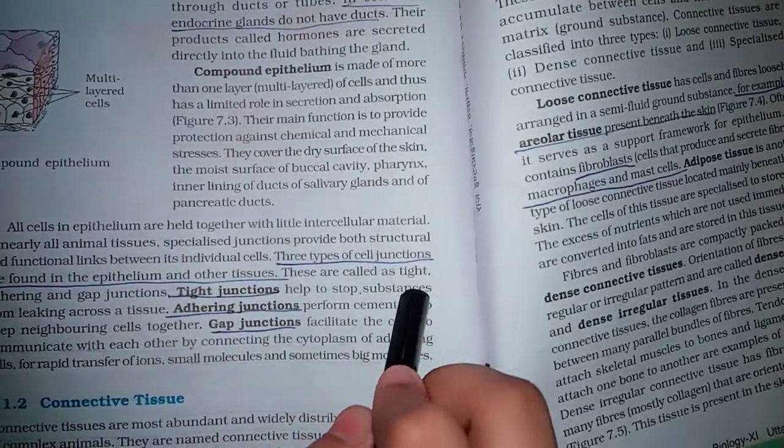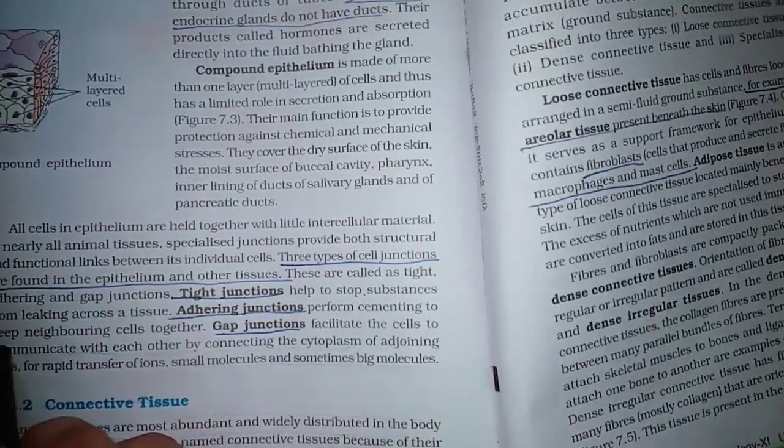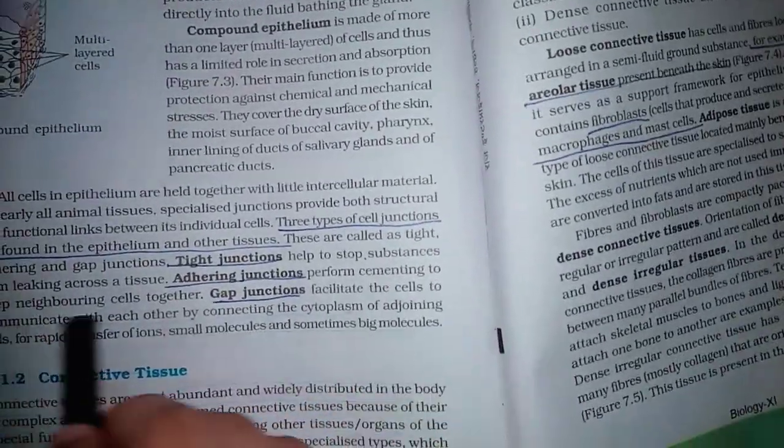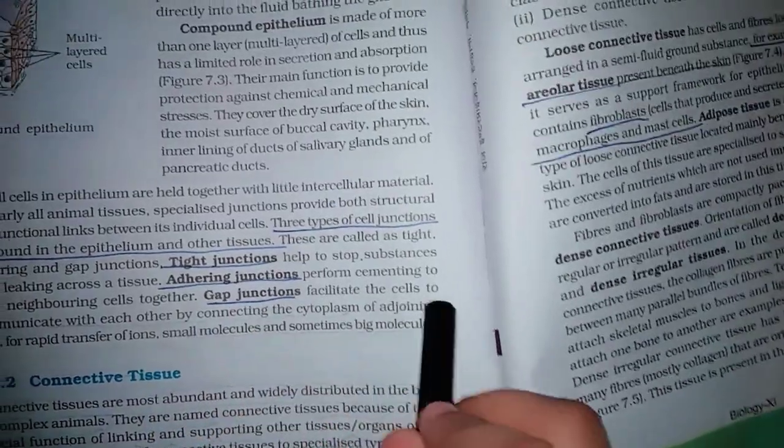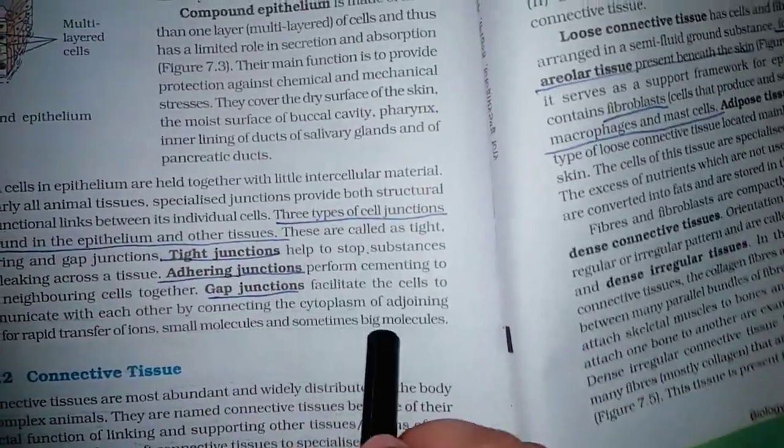Tight junctions help to stop substances from leaking across the tissue. Adhering junctions perform cementing to keep neighboring cells together. Gap junctions facilitate the cells to communicate with each other by connecting the cytoplasm of adjoining cells for rapid transfer of ions, small molecules and sometimes big molecules.